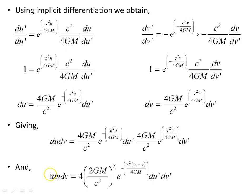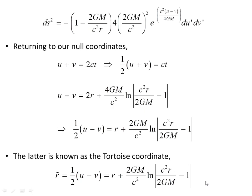That gives us ds² in terms of the new coordinates. Returning to our null coordinates: u + v = 2ct, so (u+v)/2 = ct (the Schwarzschild time coordinate), and (u−v)/2 gives an expression involving only the radial coordinate r. This latter quantity is also known as the tortoise coordinate r̃ = (u−v)/2.